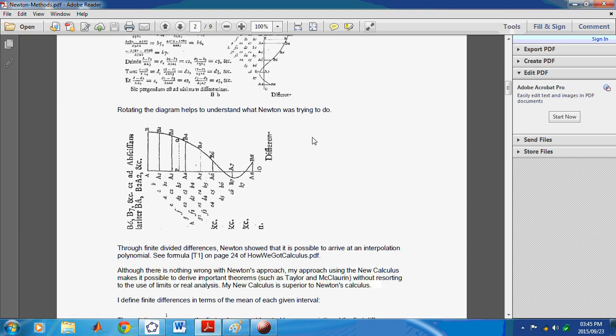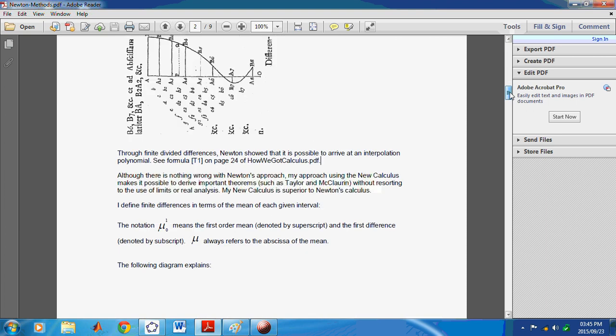Obviously, if you have an indefinitely differentiable function such as sine or cosine, or any other trigonometric function, then the differences will continue ad infinitum. Now, these differences here are called divided differences and I explain how to work with them and how to arrive at Taylor's theorem in my publication called How We Got Calculus, which is available at my website. And so, my idea for the Gabriel polynomial came from this particular concept.